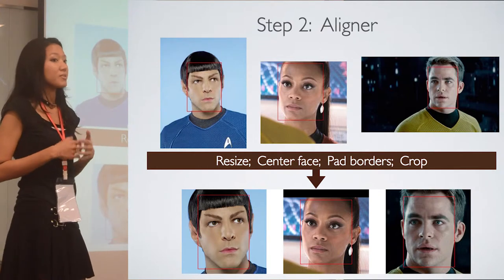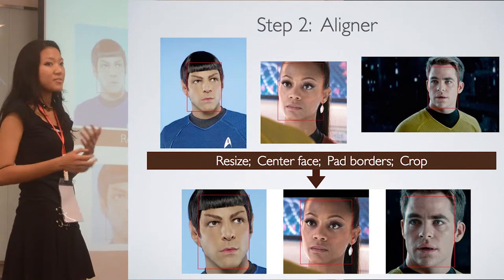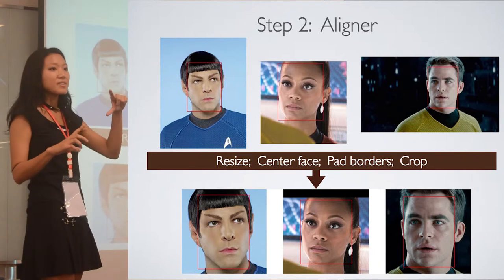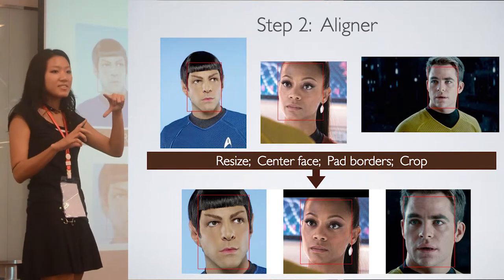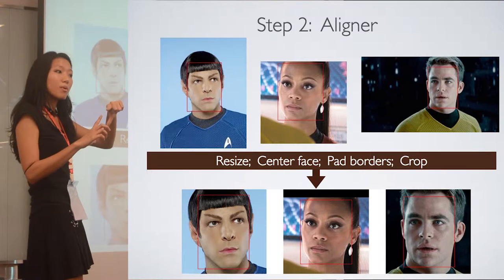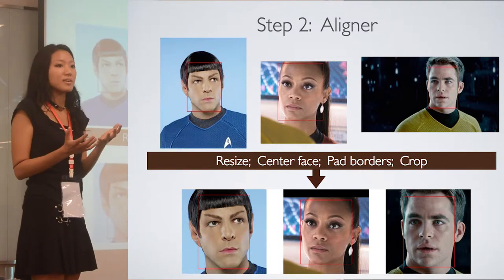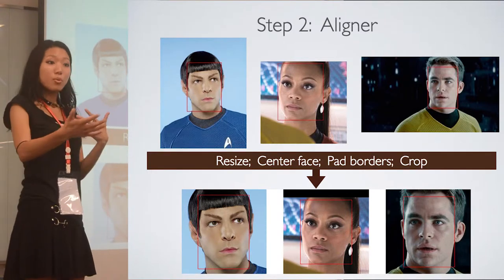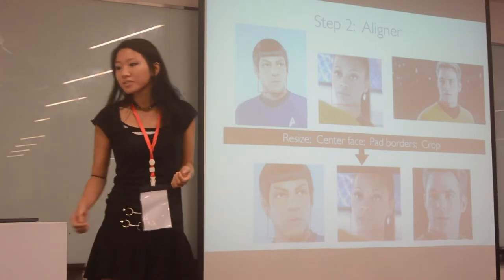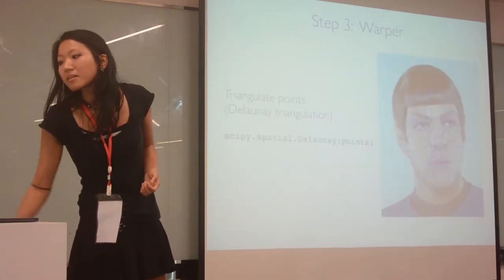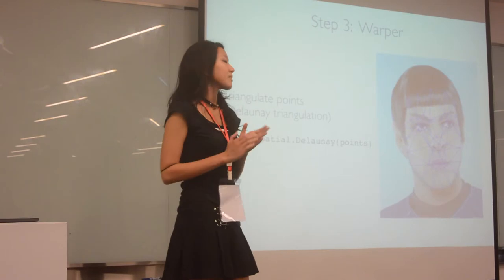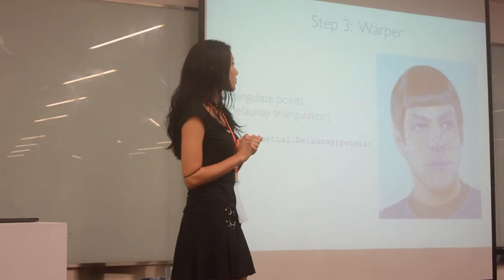Step number two is the Aligner. Our images all come in different sizes and faces are at different locations, so we need to resize them, center the faces, add borders if it's too small, and then output them all into the desired output size for the morphing sequence. This step is fairly straightforward.